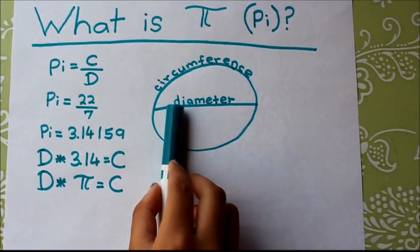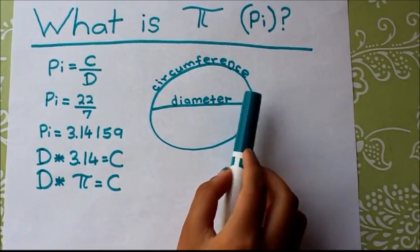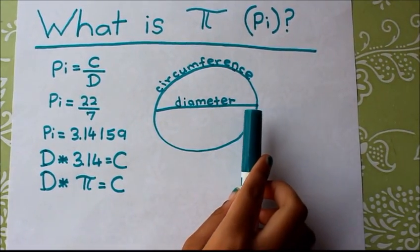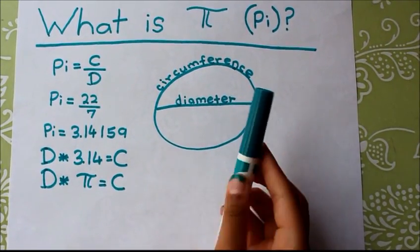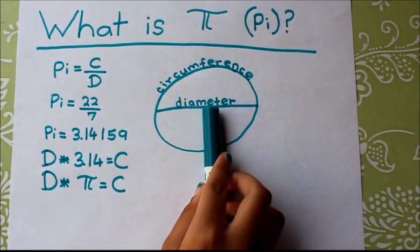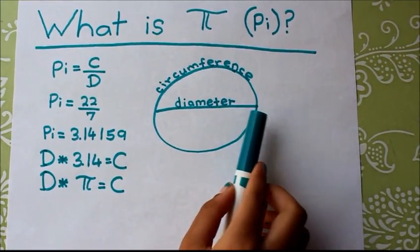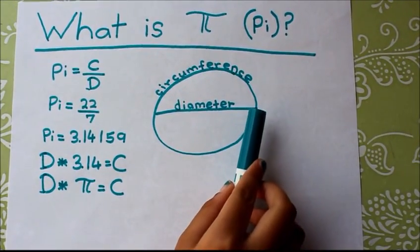Another example: if the diameter is 2, then the circumference would be 6.28 because the diameter of 2 times pi, which is 3.14, equals 6.28.